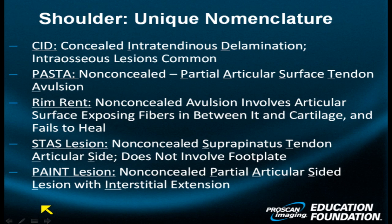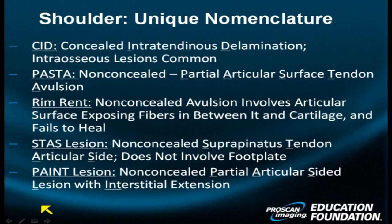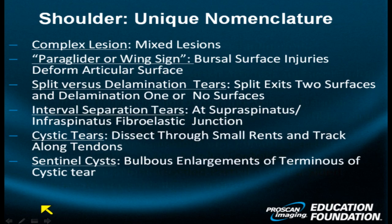The PAINT lesion. This is a non-concealed partial articular-sided lesion with interstitial extension. Non-concealed meaning it can be seen from either the superficial surface, or with the PAINT lesion, from the arthroscopic inner surface.